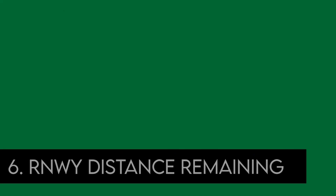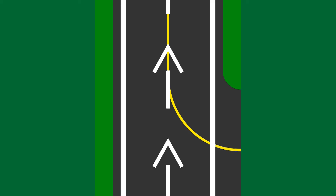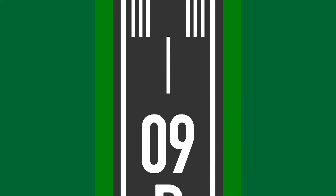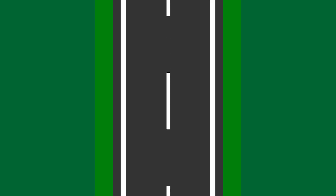Runway distance remaining signs have a black background with white numerical text and may be installed on one or both sides of the runway. The number indicates the distance of the landing runway remaining, expressed in thousands of feet. The last sign, bearing the numeral 1, will be located at least 950 feet from the runway's end.